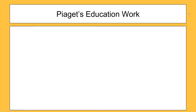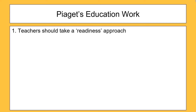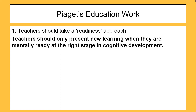We could get asked in the exam how Piaget impacted education, so let's run through the three ways that he did that. Firstly, he recommended that teachers should take a readiness approach. This is basically based on the idea that children develop in stages — Piaget is saying that teachers should only present new learning when a child is mentally ready and at the right stage. For example, if a child is four years old, we know they're egocentric, so stop asking them to think from somebody else's point of view — they're not ready.